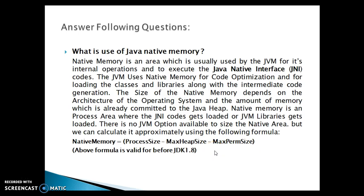We can calculate the approximate native memory size using the following formula: if you add MaxHeapSize plus MaxPermSize and subtract that from the process size, you get the approximate size of native memory. However, this works only before JDK 1.8, because from JDK 1.8 onwards there is nothing like MaxPermSize.